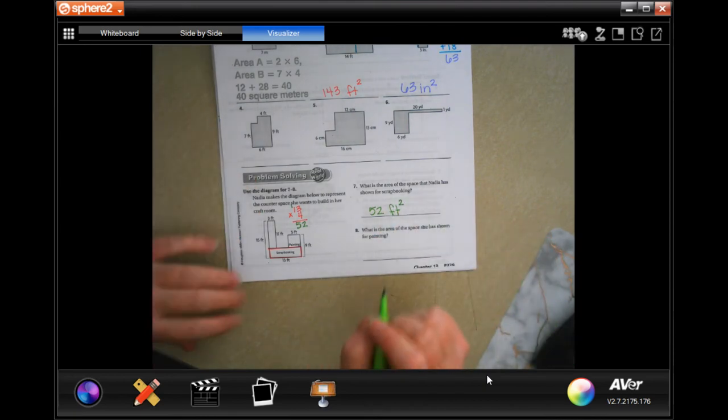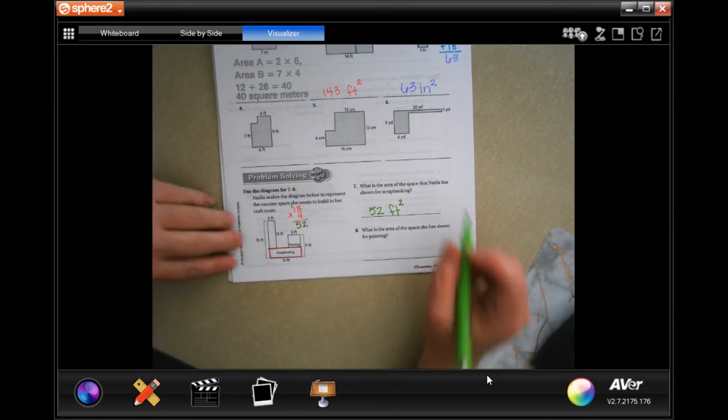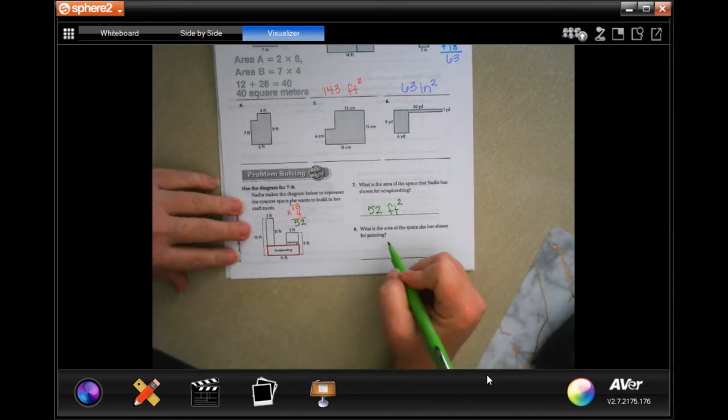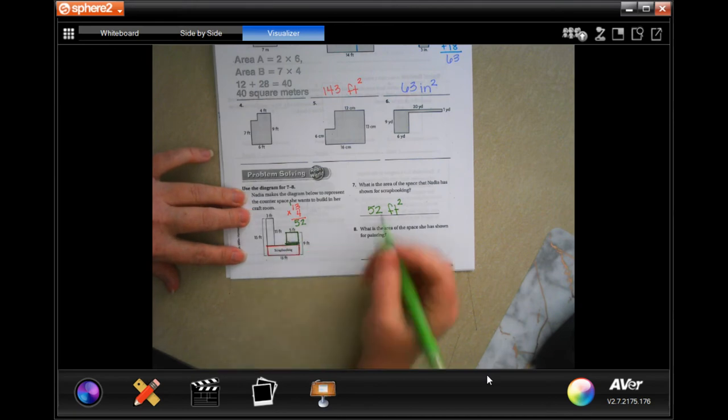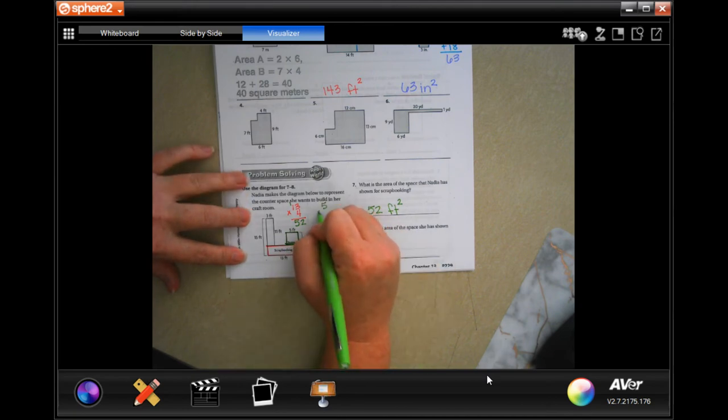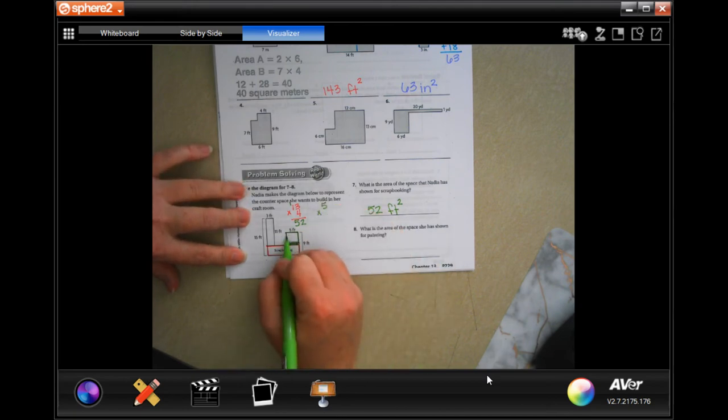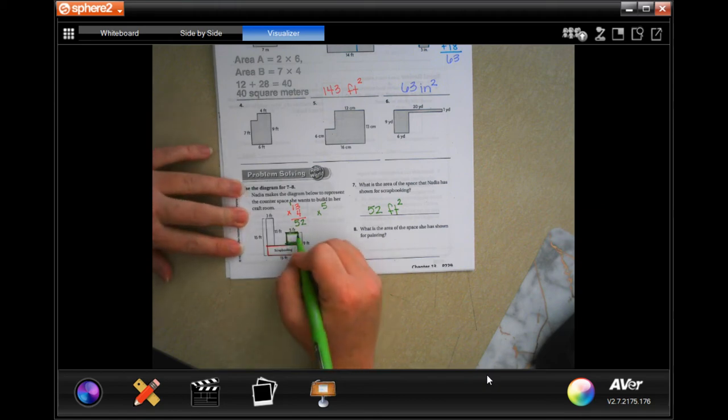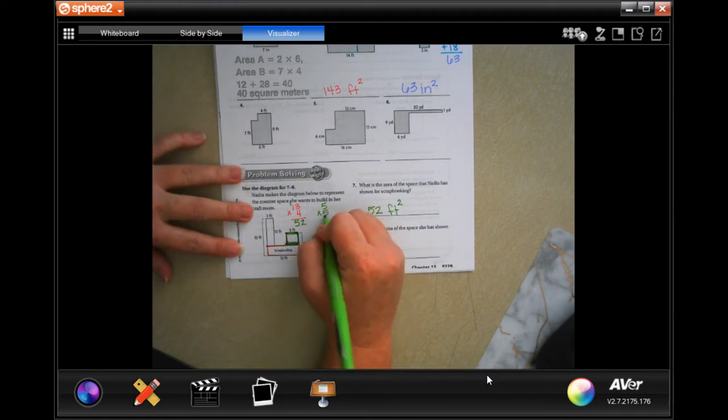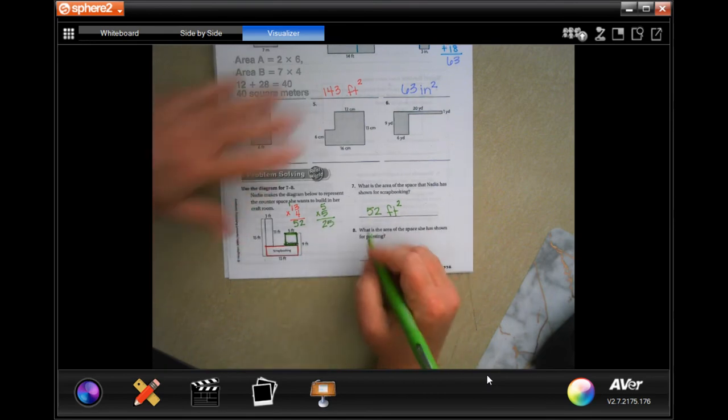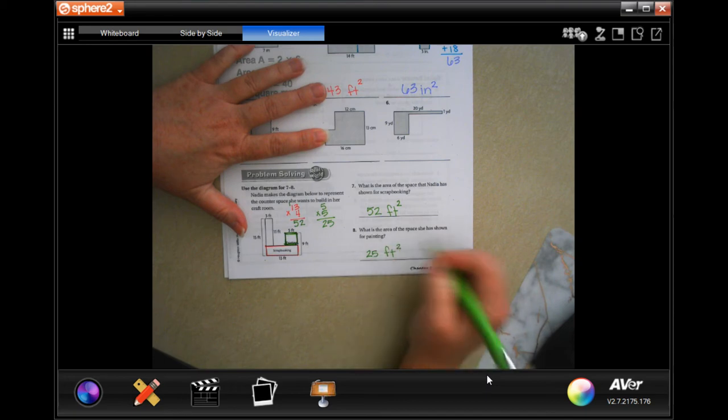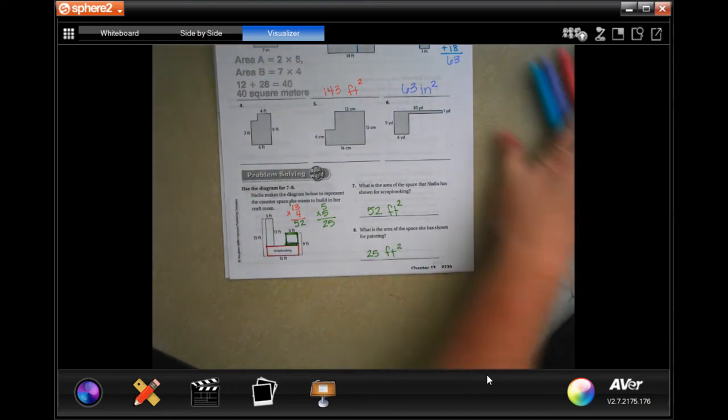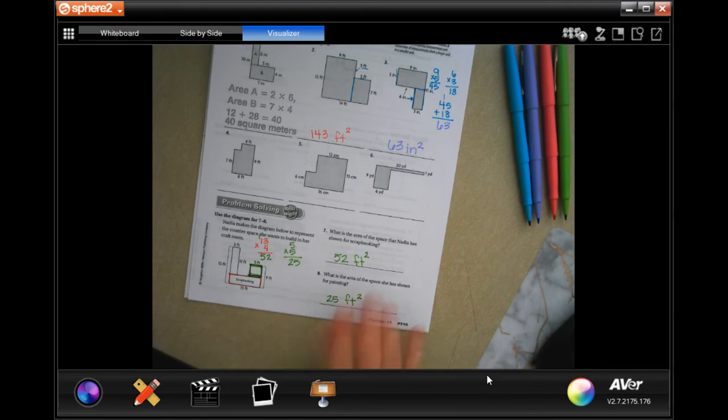What is the area of the space shown for painting? So now we have the 5... it looks like it's a square, so we're actually... yep, it is a square. So it is 5 by 5, which is 25. So 25 feet, we multiply feet by feet so feet squared. All right, we're going to go on to the back.